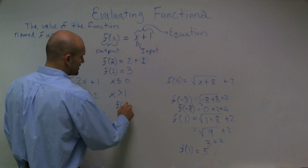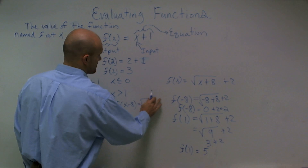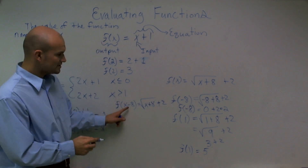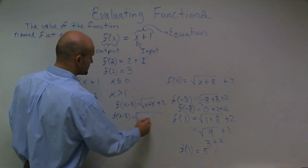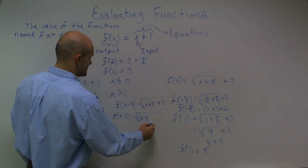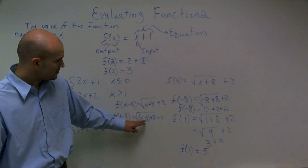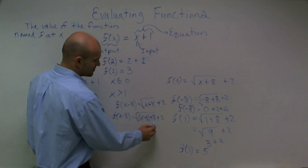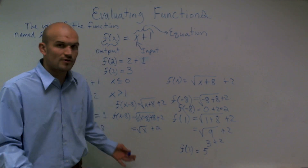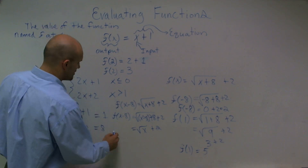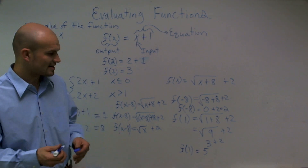Now if I evaluate f of x minus 8, that equals the square root of x plus 8 plus 2. I'm going to plug in x minus 8 for my x, so I have f of x minus 8 equals the square root of x minus 8 plus 8, plus 2. Inside the radical, negative 8 and positive 8 cancel out, and I'm just left with the square root of x plus 2. So the value of my function at x minus 8 is equal to the square root of x plus 2.